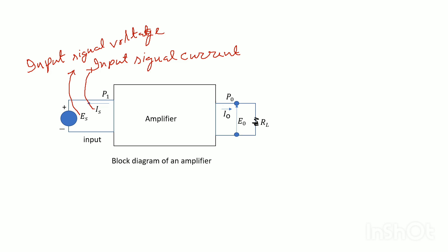If an amplifier is optimized to amplify voltage signals, it is called a voltage amplifier. For current signals, it is referred to as a current amplifier.